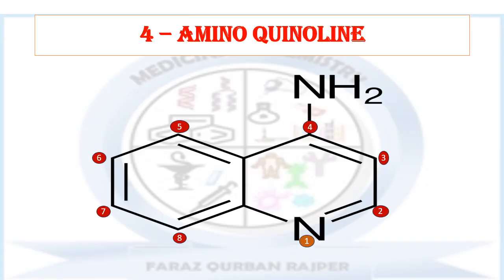This is the basic ring nucleus for the 4-amino-quinoline. Quinoline is a heterocyclic ring nucleus in which the benzene ring is fused with another heterocyclic ring, with nitrogen acting as the heteroatom. The numbering of the ring starts from the heteroatom nitrogen at position 1, 2, 3, and at the 4th position we have the amino group. This 4-amino-quinoline is used as the starting point for the synthesis of various anti-malarial drug derivatives, and with substitutions at different positions we can obtain different types of anti-malarial drugs.